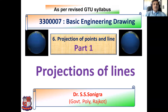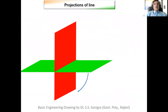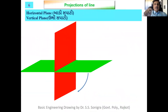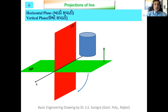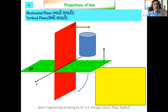We will see about projections of lines. First, let's discuss the reference planes: the horizontal plane (HP) and the vertical plane (VP). The green colored plane is the horizontal plane and the red colored plane is the vertical plane. Their intersection is the XY line. If an object is lying in the first quadrant, for example a cylinder, it is above the HP and in front of the VP.